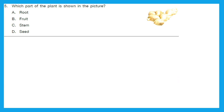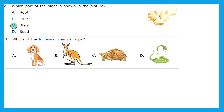Question 5: Which part of the plant is shown in the picture? This looks like ginger. Is ginger a root, a fruit, a stem, or a seed? Ginger is a stem — option C is the right answer. Question 6: Which of the following animals hops? That's an easy one.